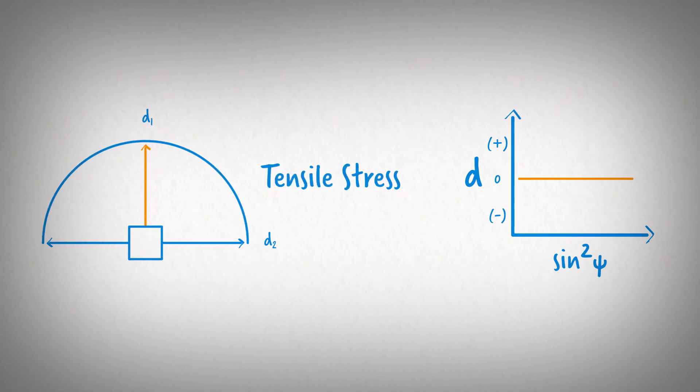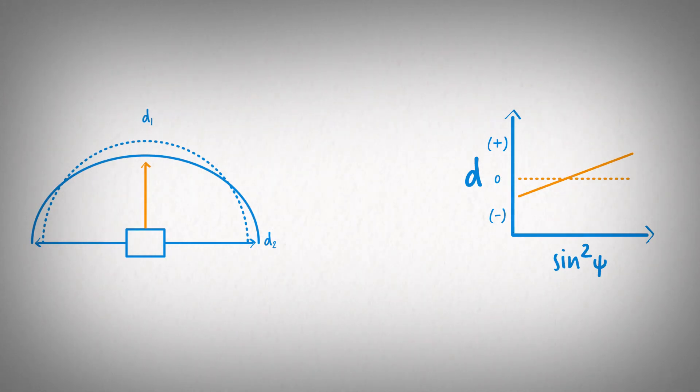In the case of a tensile in-plane stress, the D-spacings pointing in the plane of the sample will be larger than the stress-free D-spacing. The Poisson effect results in the D-spacing pointing out of the sample surface to be less than the stress-free D-spacing. In this case, the sine-squared psi plot shows a line with a positive slope.